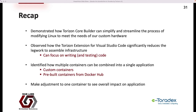To recap, we've demonstrated how Torizon Core Builder can simplify and streamline the process of modifying Linux to meet the needs of our custom hardware. We've observed how the Torizon extension for Visual Studio Code significantly reduces the legwork to assemble infrastructure, allowing us to focus solely on writing and testing the code for our final application. We've also identified how multiple containers can be combined to form a single application and deployed onto the target hardware, combining our own custom containers with pre-built containers from Docker Hub to minimize any rework necessary.